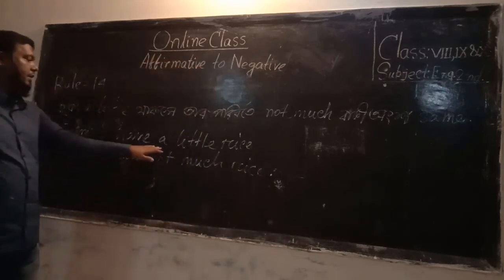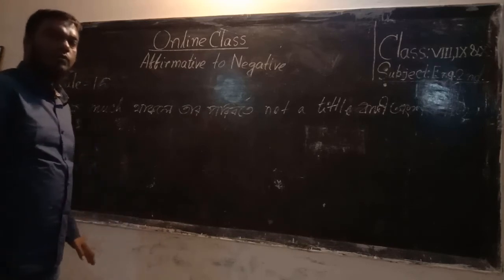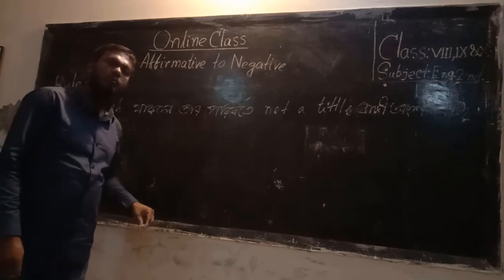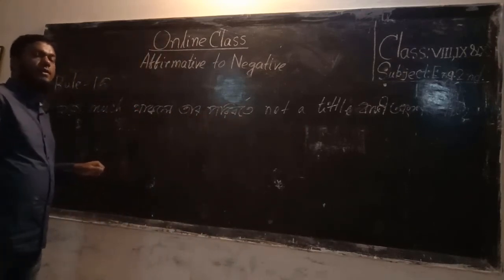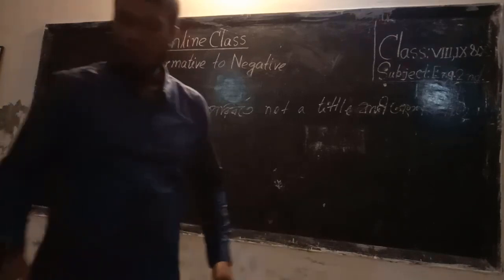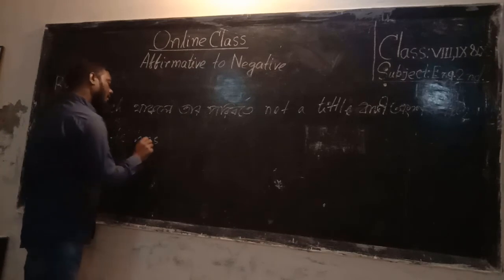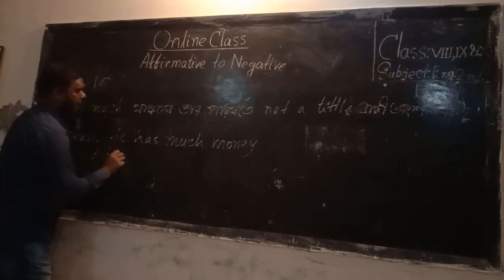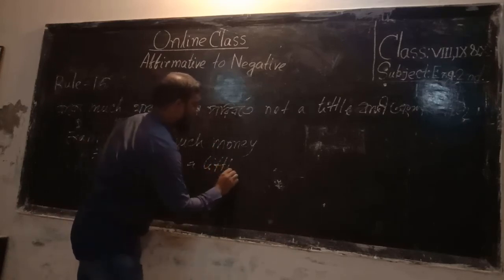Rule number fifteen — the last rule. If we find the word 'much' in a sentence, we replace it with 'not enough' or 'little,' and the rest of the sentence stays the same when converting to negative. Example: 'He has much money.' The answer will be: 'He has not enough money.'